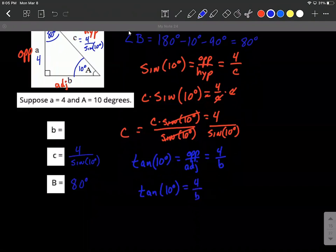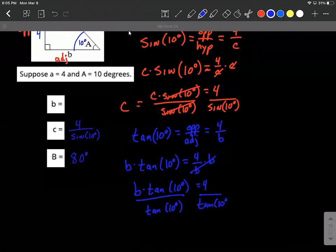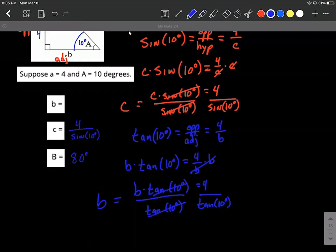The work here is going to be very similar to what we just did up above, that we're going to multiply both sides to get our variable out of the denominator. B times tangent of 10 degrees equals 4, and we need to divide both sides by tangent of 10 degrees. To get B on one side all by itself, we can go ahead and fill in that's going to be 4 over tangent of 10 degrees.